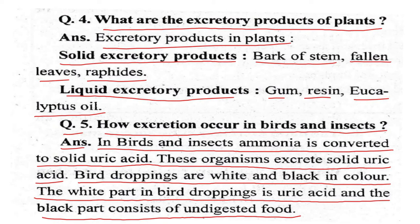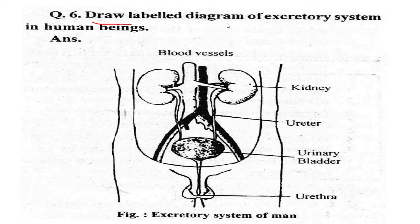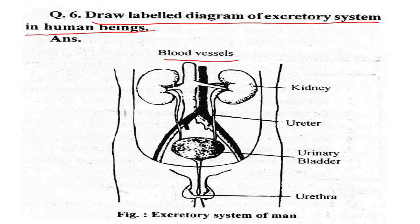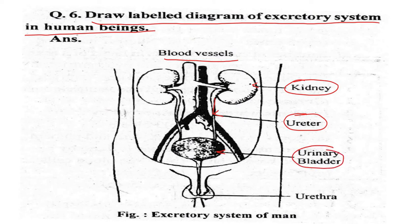Now draw the labeled diagram of the excretory system in human beings. You can see the kidneys, connected by ureters leading to the urinary bladder, where urine is stored. Do practice drawing this diagram as it is very important.